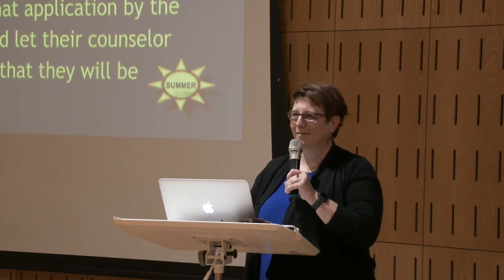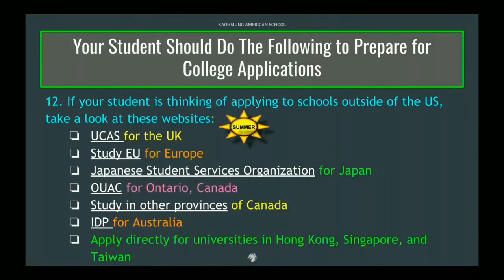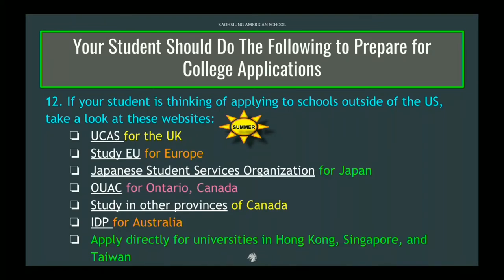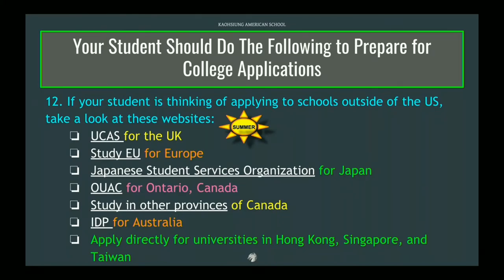Number twelve: these are other places to find information if a student is interested in applying somewhere other than the United States. From what we've heard from your students, many are still interested in US universities but also Canadian, Australian, UK, Japanese, and others. All good information — and again, these are decisions to be thinking about over summer.